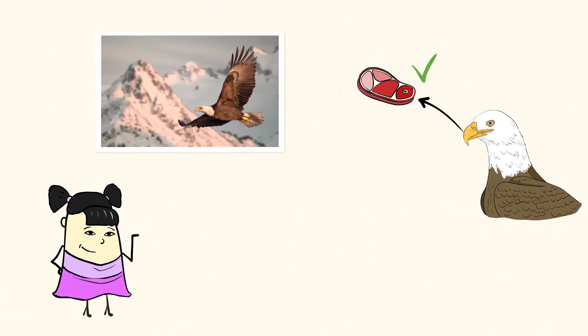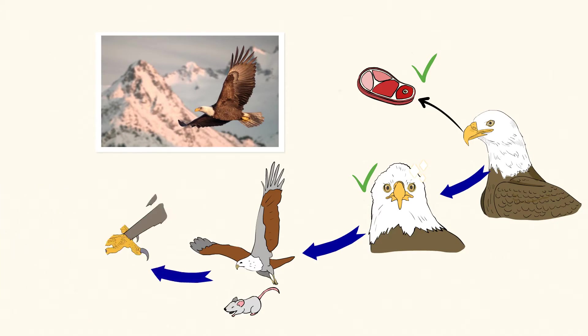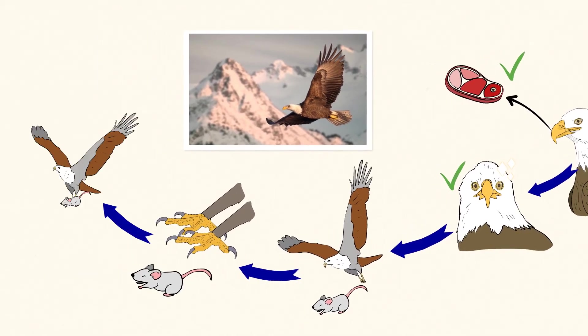They fly up high in the air and use their amazing eyesight to spot their prey, usually smaller animals like mice running around in the grass. Then, they swoop down and use their sharp claws to grab their meal.